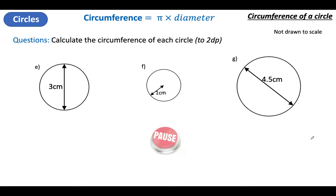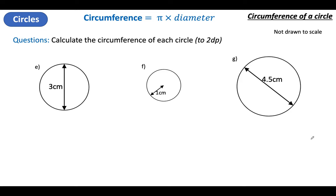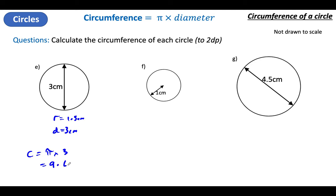Three more for you — two decimal places. Pause the video, work through those, round them to two decimal places, and unpause when you're done. We've unpaused. R equals, D equals. I've got a diameter, so that's 3. My radius will be half of that — 1.5. Circumference then is Pi times diameter — so Pi times 3 — which is 9.42 to two decimal places.